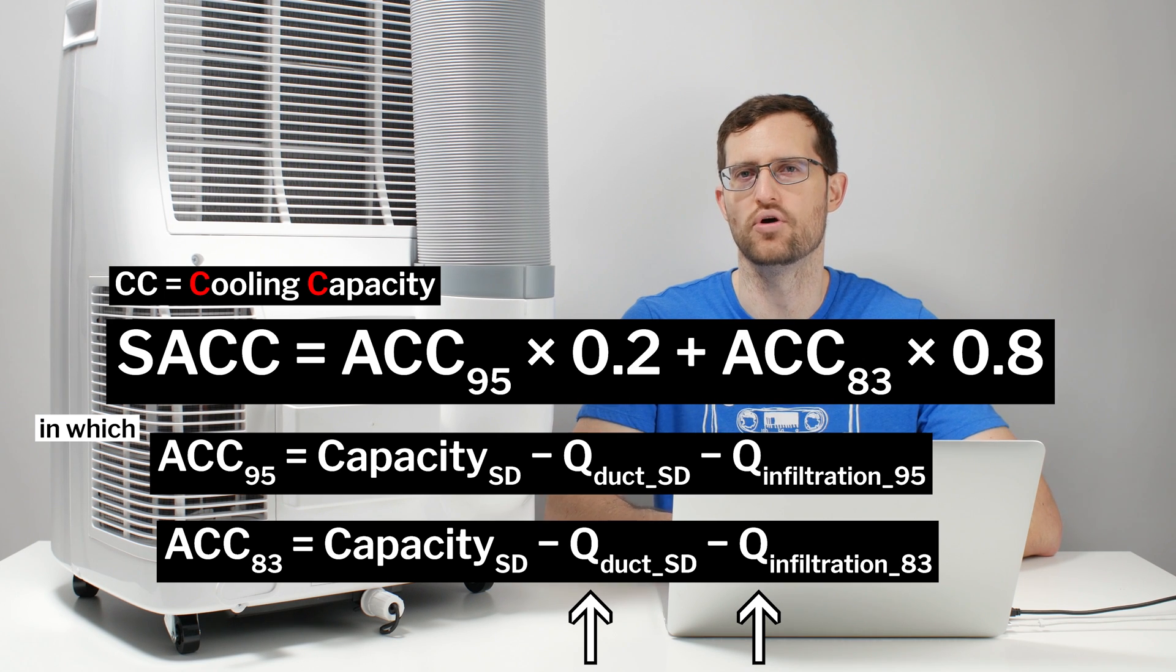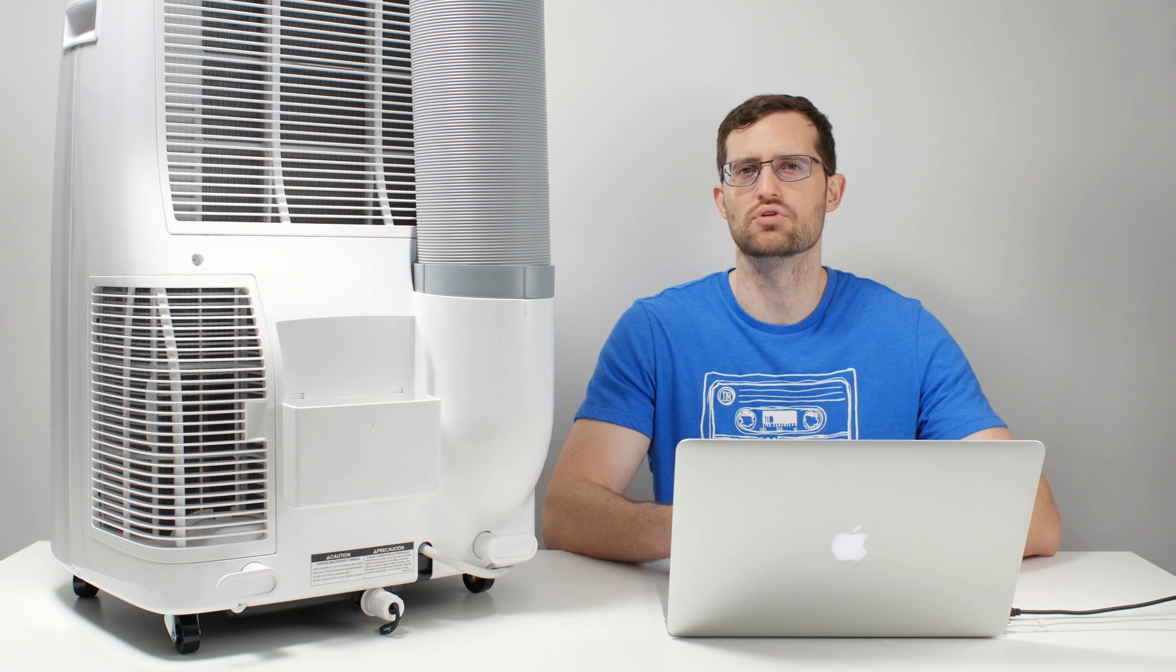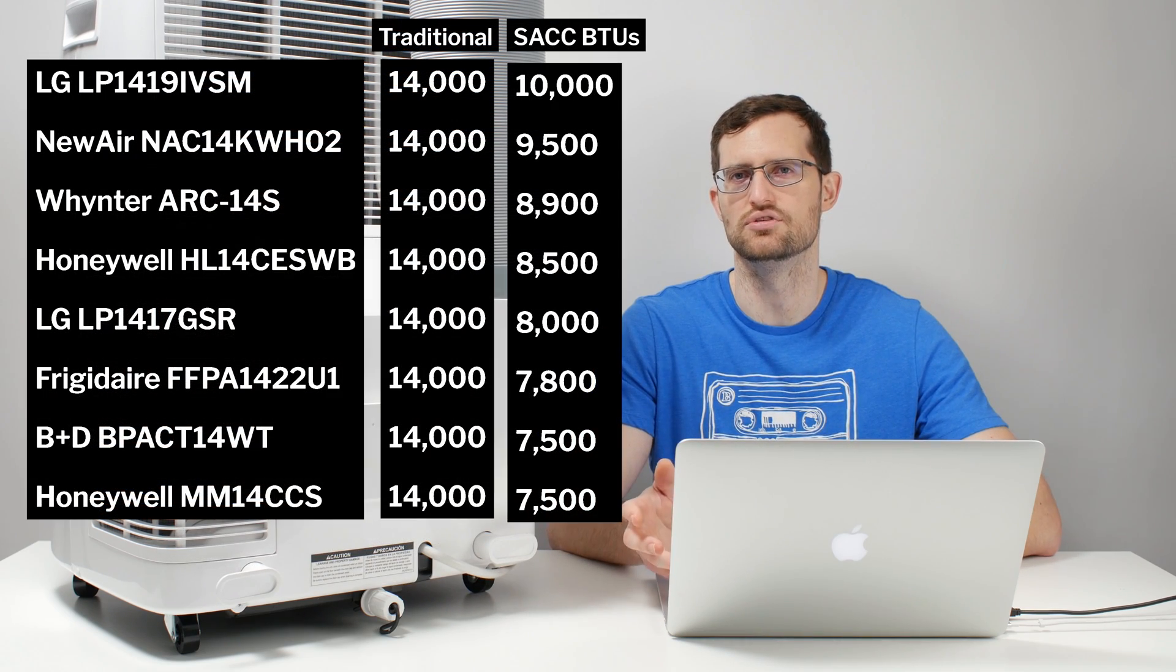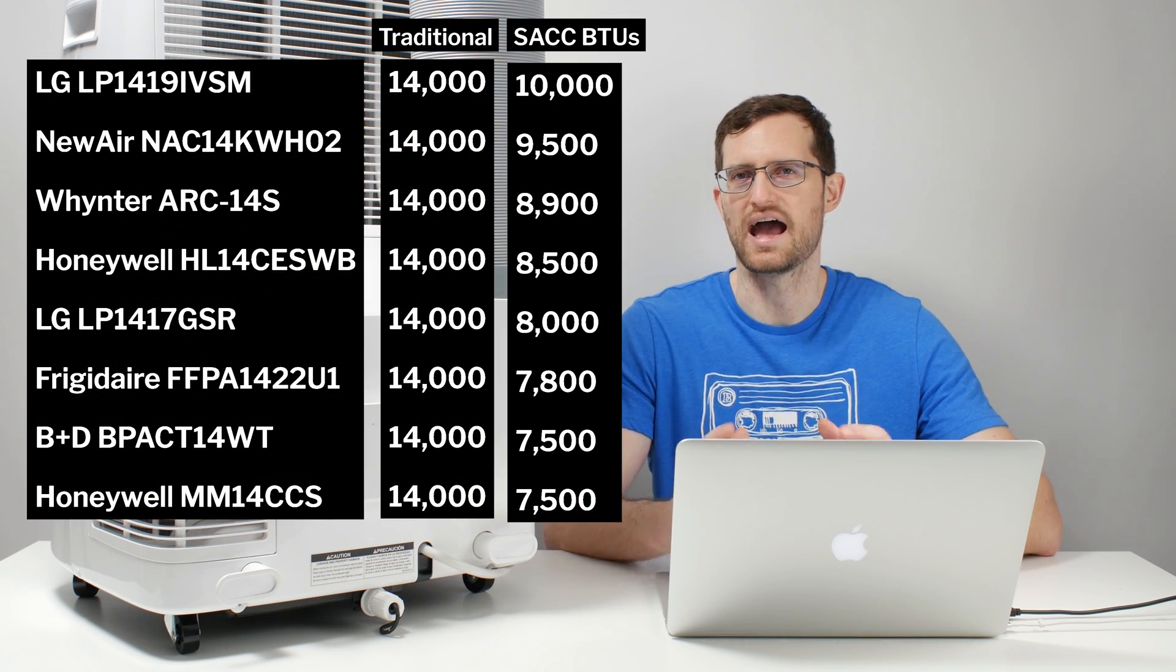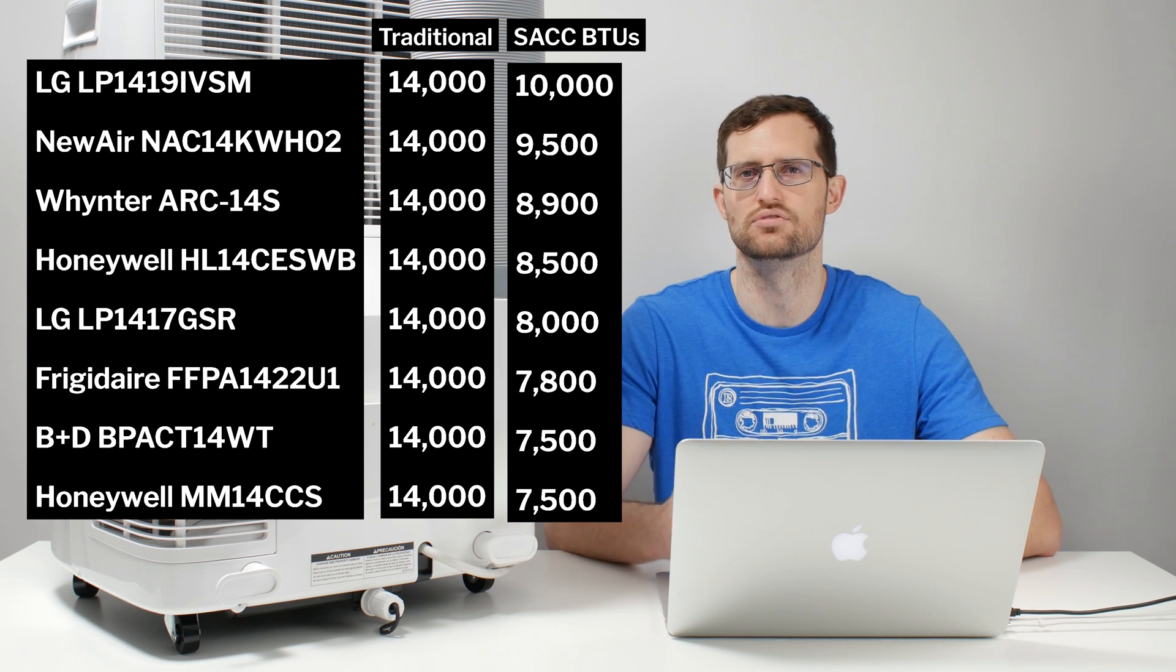Now, this is a very important point. In the past, you would walk into a home goods store or you would shop online and you would compare different 14,000 BTU units and you would have no idea between the actual cooling capacity between these different units. They would all simply be 14,000 BTU units.